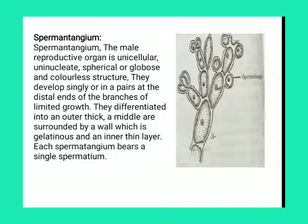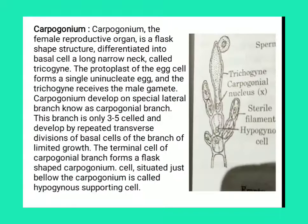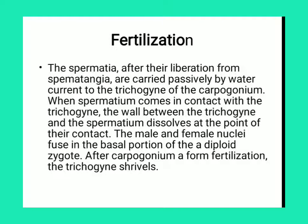We discussed in our previous lecture what is spermatangium and what is carpogonium. Spermatangium is the male reproductive organ and carpogonium is the female reproductive organ. The spermatia, after their liberation from the spermatangia, are carried passively by the water current to the trichogyne of the carpogonium. When the spermatangium comes into contact with the trichogyne,